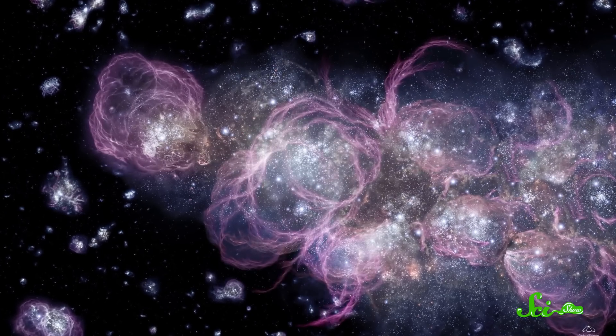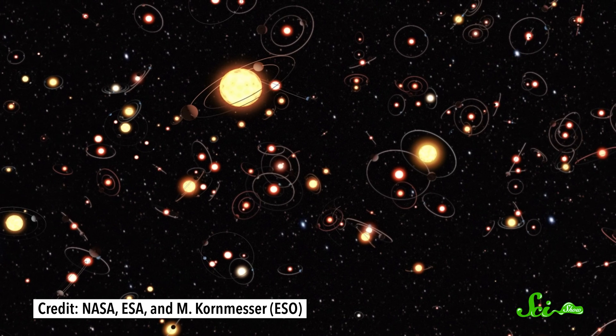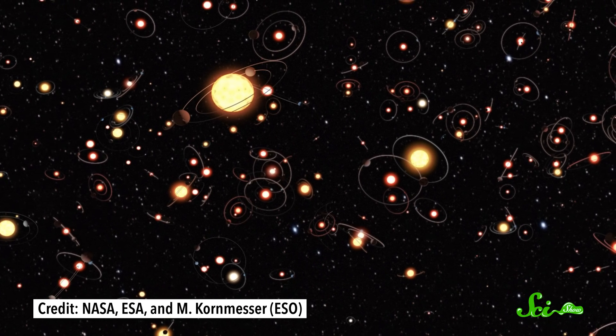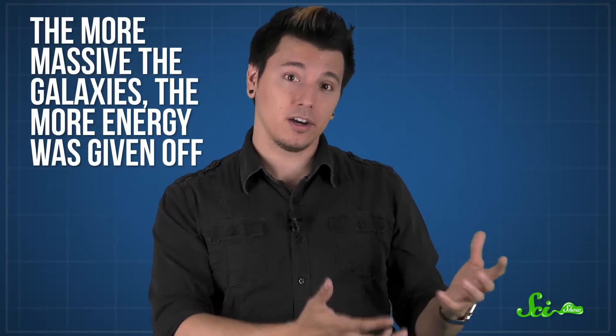Before galaxy clusters formed, they were just huge, swirling balls of matter. Eventually, that matter condensed, forming stars and galaxies and planets, and that process gave off a huge amount of energy, which was ultimately converted into heat. The more massive the galaxies, the more energy was given off, which made the intracluster medium hotter.